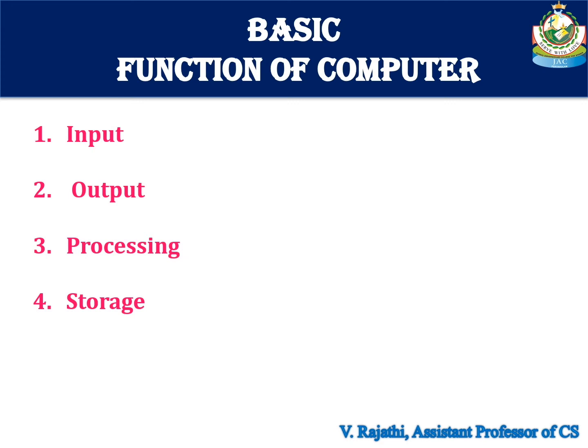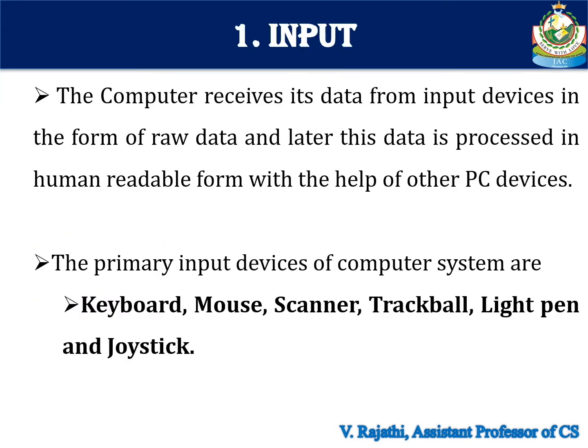These are the very basic functions of a computer. The first one is input, output, processing, and storage. For input, the computer receives its data from input devices in the form of raw data, and later this data is processed into human readable form. Some examples of primary input devices are keyboard, mouse, scanner, trackball, light pen, and joystick.